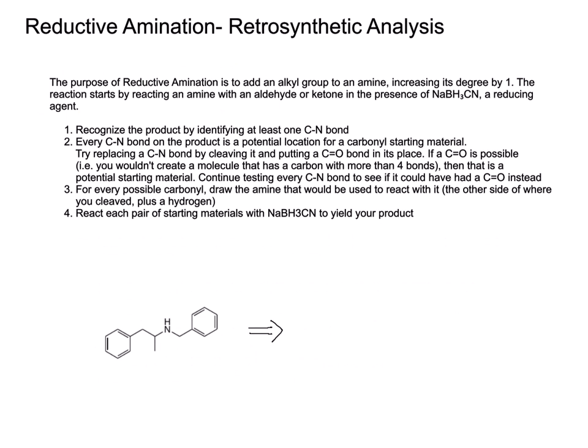It is very common for professors to ask retrosynthetic analysis questions on reductive amination. The purpose of reductive amination is to increase the degree of an amine by one by reacting it with an aldehyde or ketone in the presence of NaBH3CN. To carry out the retrosynthetic analysis, all we need to do is identify at least one carbon-nitrogen bond. Every single carbon-nitrogen bond on the product is a potential location for a carbonyl starting material. So we're going to try replacing a carbon-nitrogen bond by cleaving it and putting a carbon-oxygen double bond in its place. If a carbon-oxygen double bond is possible, then that is a potential starting material. Then we continue testing every carbon-nitrogen bond to see if it could have had a carbon-oxygen double bond.